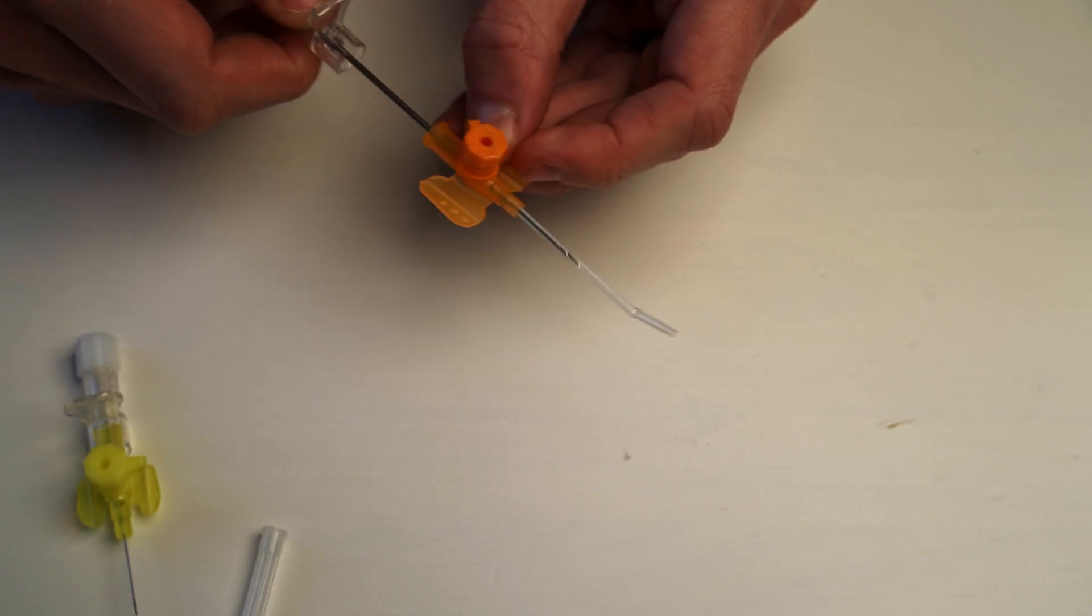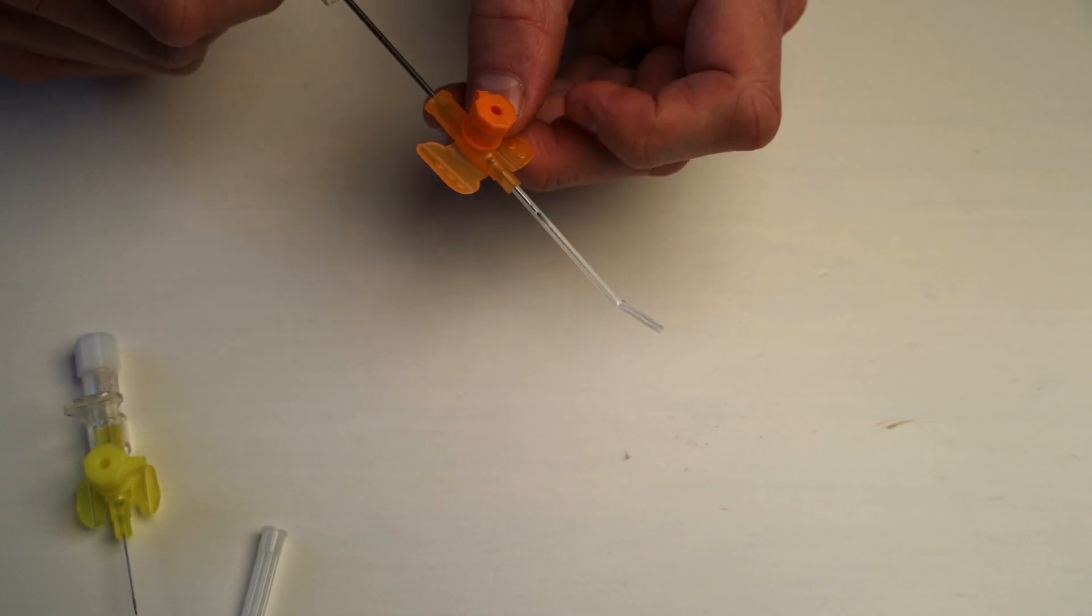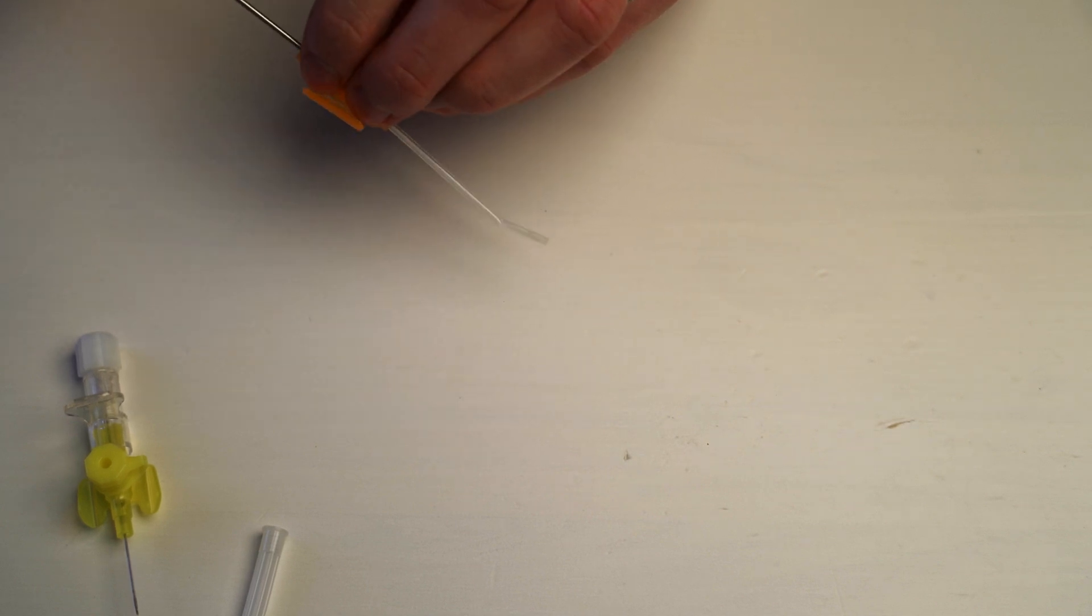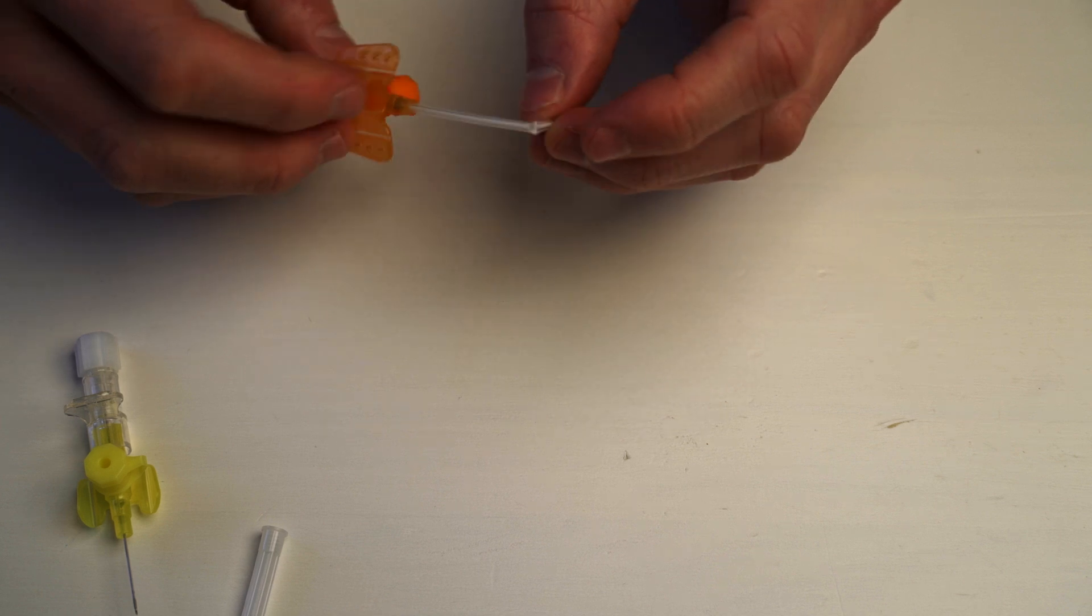If you're pulling the needle out and you want to now put it back in, you don't. You completely remove the needle and you throw the needle away. You do not advance the needle back through the cannula.